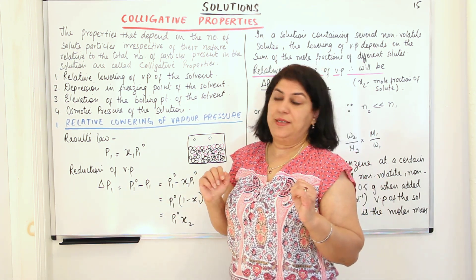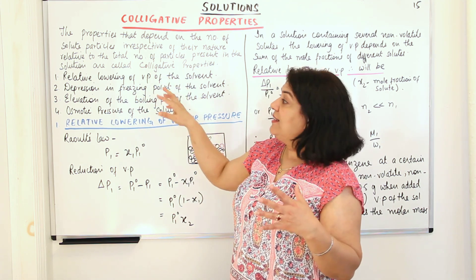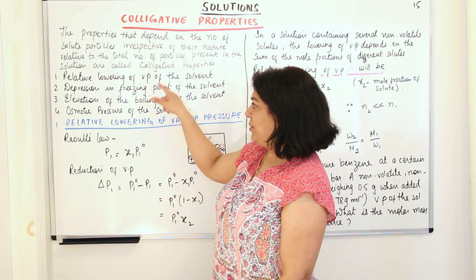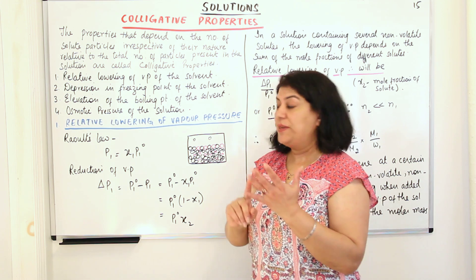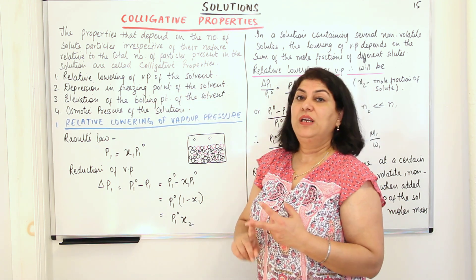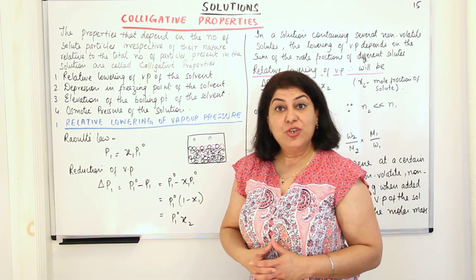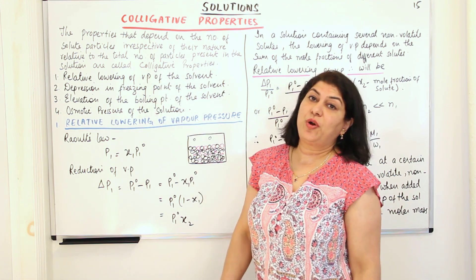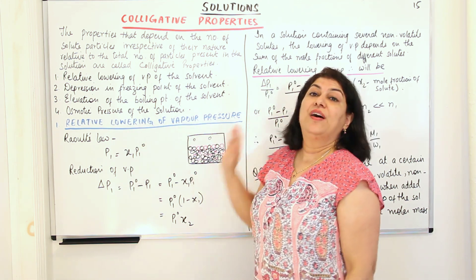There are four colligative properties. One that you have already studied when we did Raoult's law — it was the lowering of vapor pressure, and since we are talking in respect to the entire solution, we will call it the relative lowering of vapor pressure. The second is depression in freezing point of the solvent. The third is elevation in the boiling point of the solvent. And the last colligative property is osmotic pressure of the solution.